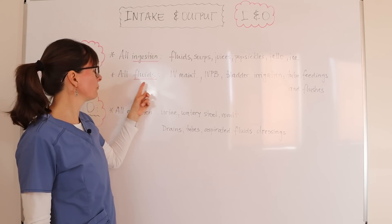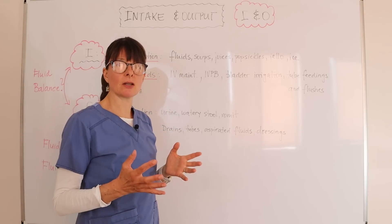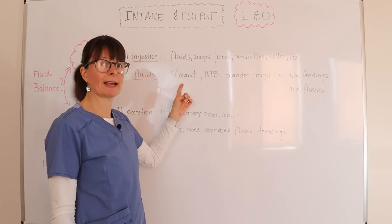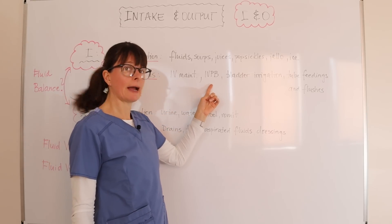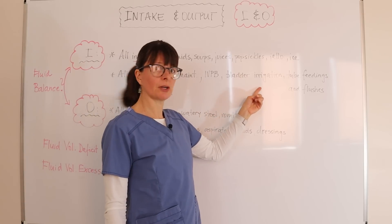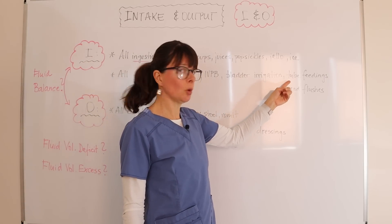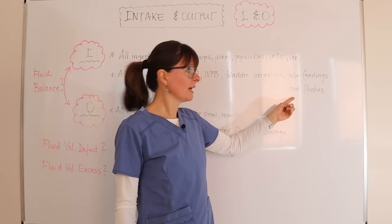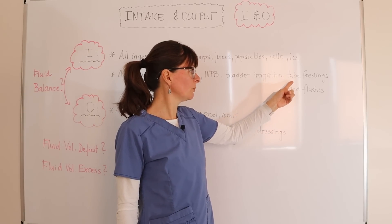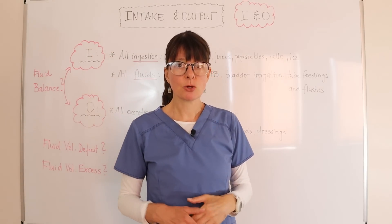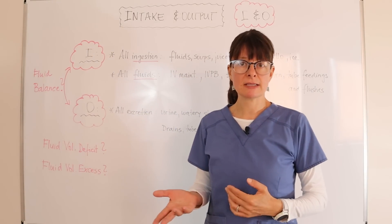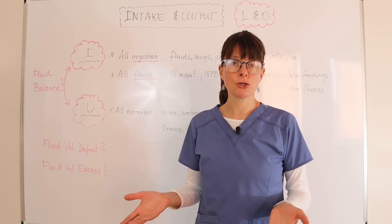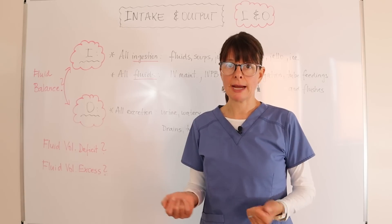And then all fluids that the patient takes in apart from the GI tract — so that will be any kind of IV maintenance fluids, IV piggybacks, any kind of bladder irrigation, any tube feedings, as well as any flushes. Flushes can be from tube feedings or IV flushes, especially if the patient has a central venous access device that requires a flush of 10 milliliters usually per port, so that could add up over time.